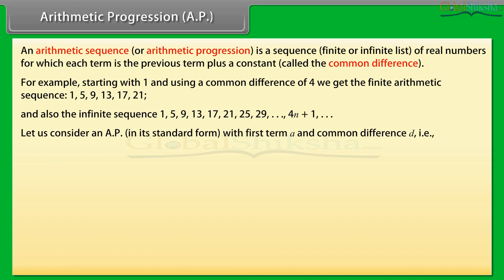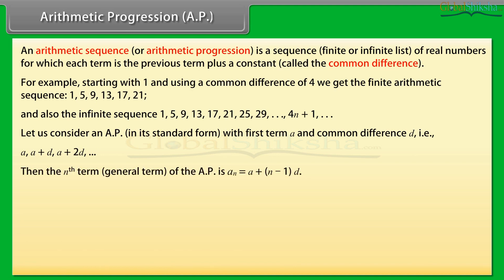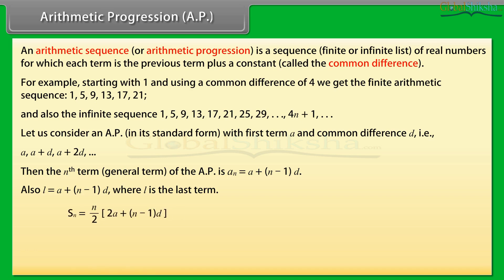Consider an AP in its standard form with first term A and common difference D: A, A+D, A+2D, and so on. Then the nth term (general term) is: An = A + (n−1)D. Also, L = A + (n−1)D, where L is the last term. Also, Sn = (n/2)[2A + (n−1)D], or Sn = (n/2)(A + L), where Sn is the sum to n terms of the AP.